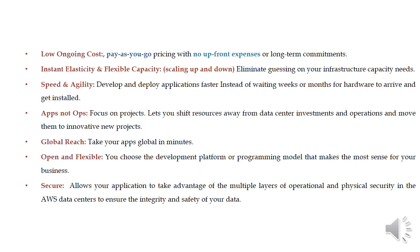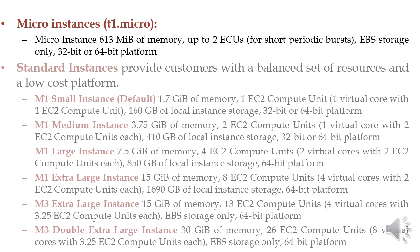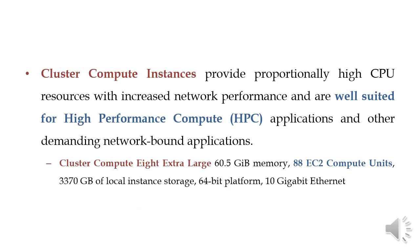It is open and flexible, with advantages across multiple layers. Physical security is handled at the AWS data center to ensure integrity and safety of data. Micro instances have 613 MiB of memory and up to 2 EC2 units. Standard instances include M1 small and M1 medium instances, with capacity varying from gigabytes up to petabytes and terabytes. Cluster compute instances provide proportionally high CPU resources with increased network performance, well suited for high-performance compute applications. These have 88 EC2 compute units on the platform.